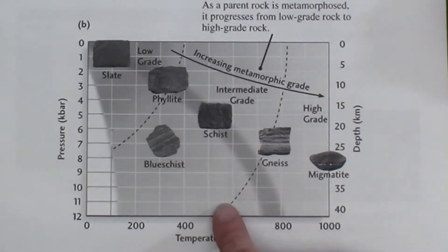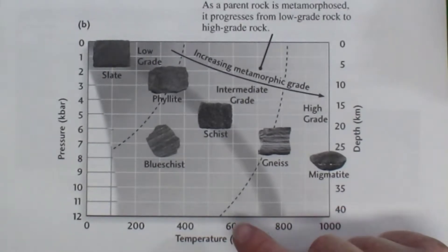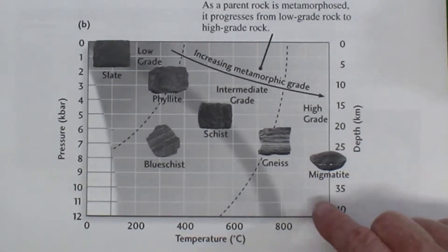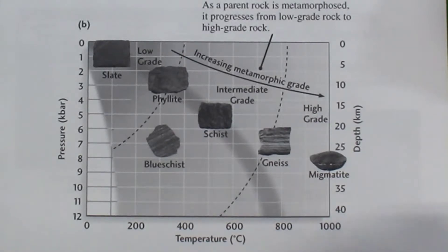If the pressure is high, then intermediate grade stops at about 550 degrees Celsius. Higher grade metamorphism extends from about 550 degrees Celsius up to, in some cases, close to 1000 degrees Celsius, but that will depend on the minerals that are present and the amount of pressure the rocks are subjected to.